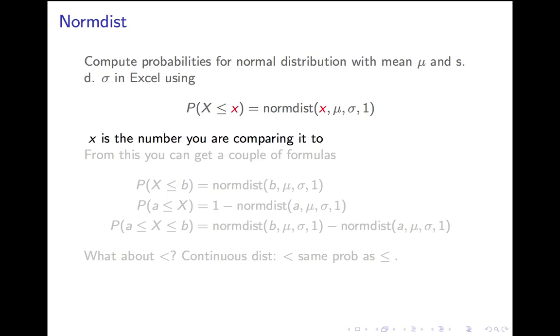you use the command normdist. The probability that that random variable is less than or equal to a number x is equal to normdist of x comma μ comma σ comma 1. Where x, the first entry, is the number you're comparing it to. You're going to get the probability of getting less than that number. The second entry is the mean of your distribution. The third entry is the standard deviation σ of your distribution.